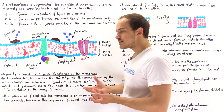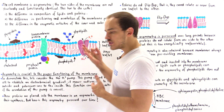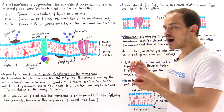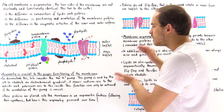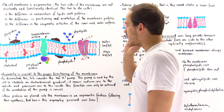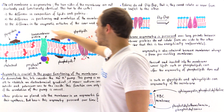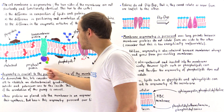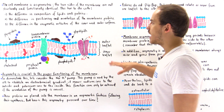What factors contribute to the asymmetry of the plasma membrane? We have to consider three things. Number one: there is a difference in the composition of the proteins, lipids, and carbohydrates found on the two sides of the membrane. For instance, we have glycolipids and glycoproteins on this side that we don't find on the other side, and likewise we have a peripheral protein on this side that we don't find on the other side.